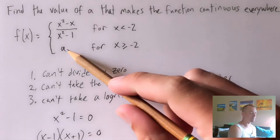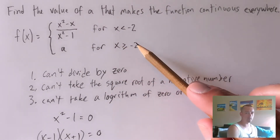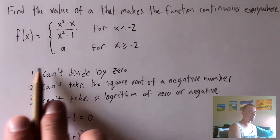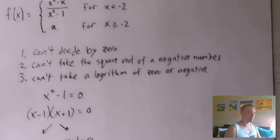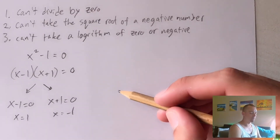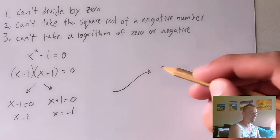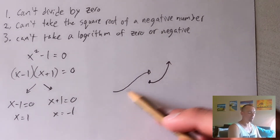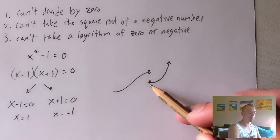We've confirmed that each piece by itself is continuous on its entire defined domain. Now we need to make sure the piecewise function as a whole is continuous when we jump from one piece to the other. Think about what that looks like on a graph: if we have a piecewise function defined by one function on one side and another function on the other side, it would not be continuous at the point where we flip from one to the other if there's a gap.